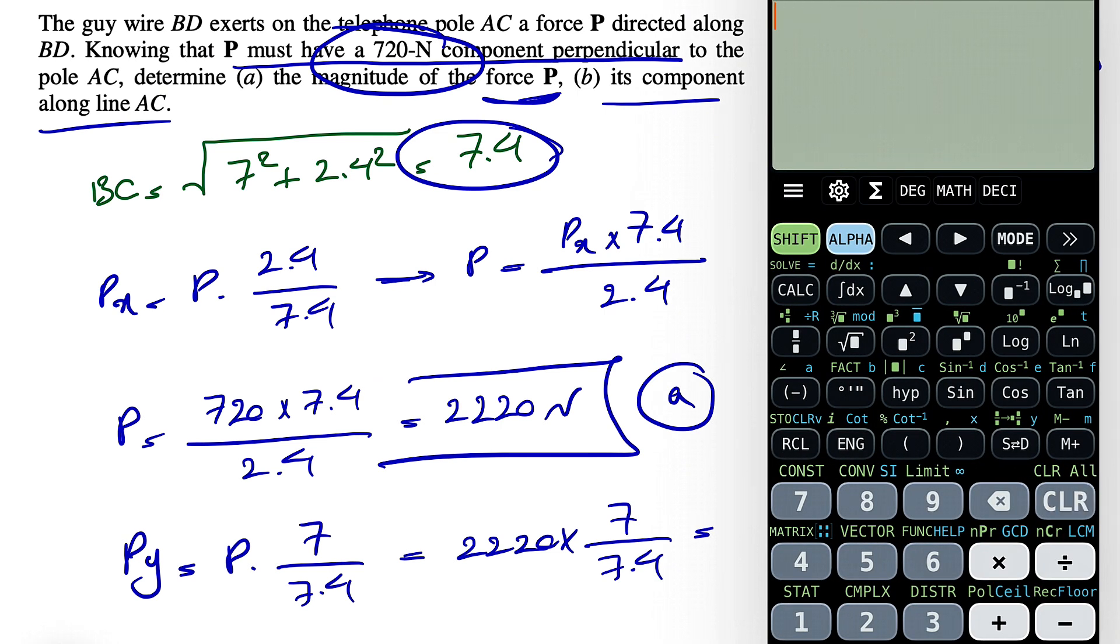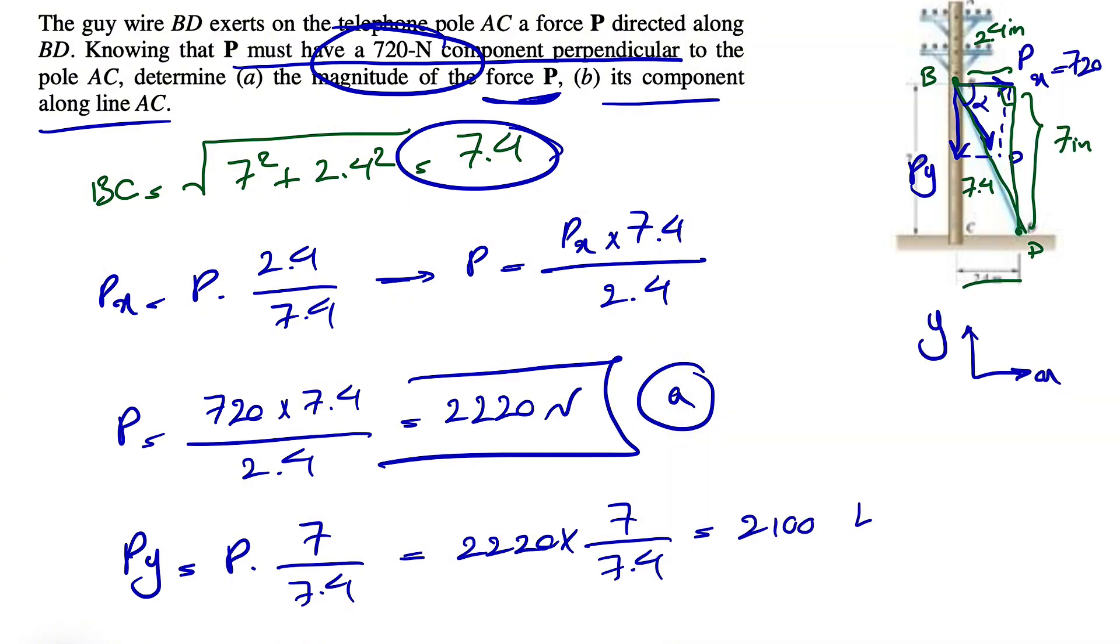Let's see what we get. 2220 times 7 divided by 7.4. 2100 Newtons, which would be the answer for part B of the question.